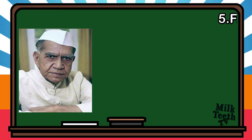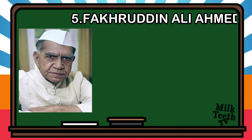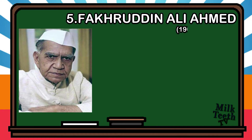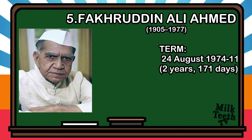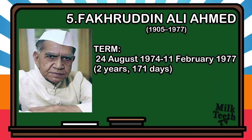Fifth President of India: Fakhruddin Ali Ahmed. Born in 1905, he became the President of India on 24th August 1974 and served till 11th February 1977, for a period of 2 years and 171 days.